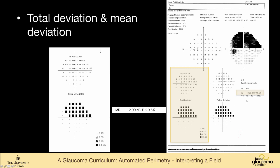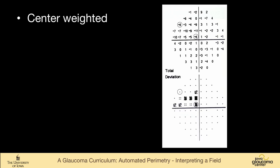And then the mean deviation over here is the center-weighted average of all of these points here. So again, the central points are more reproducible and more important, and so this number is center-weighted. And so on average, this person is down 12.99 decibels, which is highly significant at a p-value of less than 0.5%. So this point, 13 decibels is less sensitive than expected for a 53-year-old.